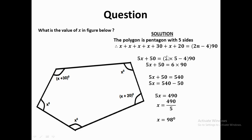Collecting like terms on the left-hand side, you get 5x plus 50 — where the constant terms 30 and 20 give 50, and the x terms give 5x. Simplifying the right-hand side gives 540, the sum of interior angles of a pentagon. Taking 50 to the other side: 5x equals 540 minus 50, which gives 5x equals 490. Dividing both sides by 5 gives x equals 98 degrees. That is the value of x for this question.